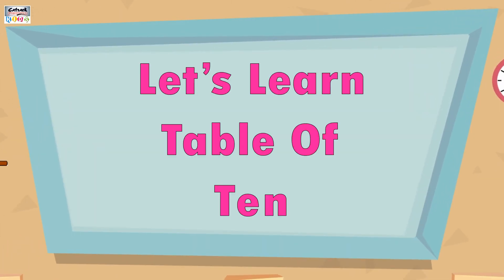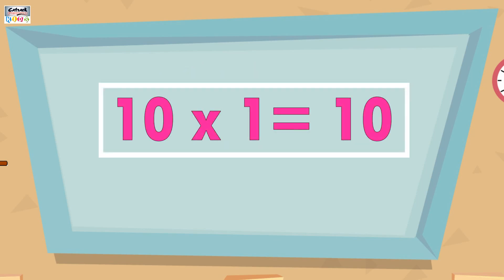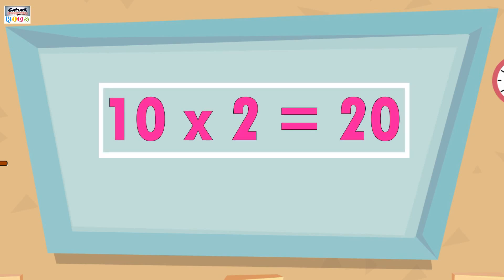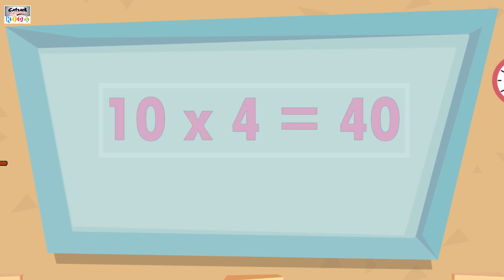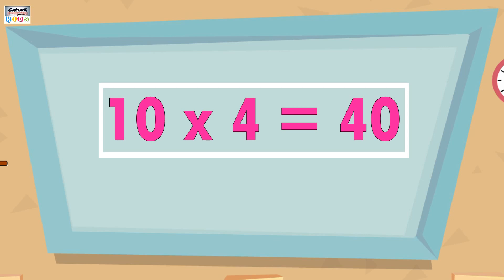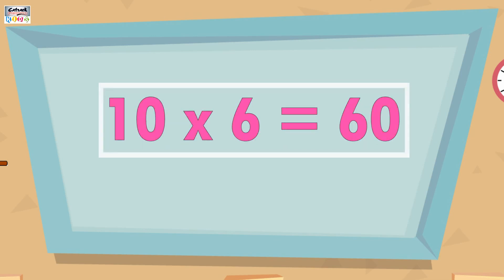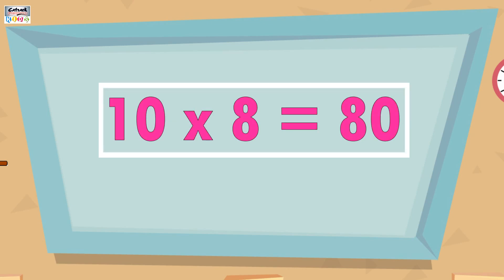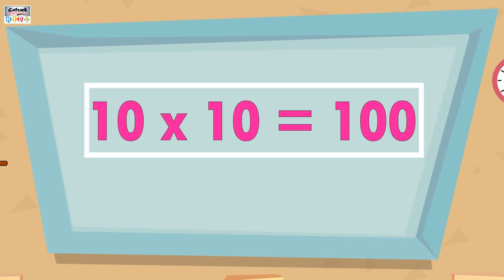Let's learn the table of ten. Ten ones are ten, ten twos are twenty, ten threes are thirty, ten fours are forty, ten fives are fifty, ten sixes are sixty, ten sevens are seventy, ten eights are eighty, ten nines are ninety, ten tens are hundred.